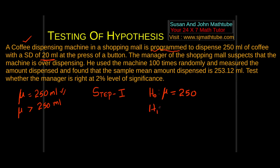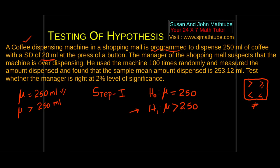H1 means alternative hypothesis — whatever we try to prove about the population with the help of samples. What are we trying to do here? We are trying to prove that it is over-dispensing. There are three possibilities: greater than, less than, or not equal to. Greater than or less than gives a single tail. Not equal to gives a two-tailed test.